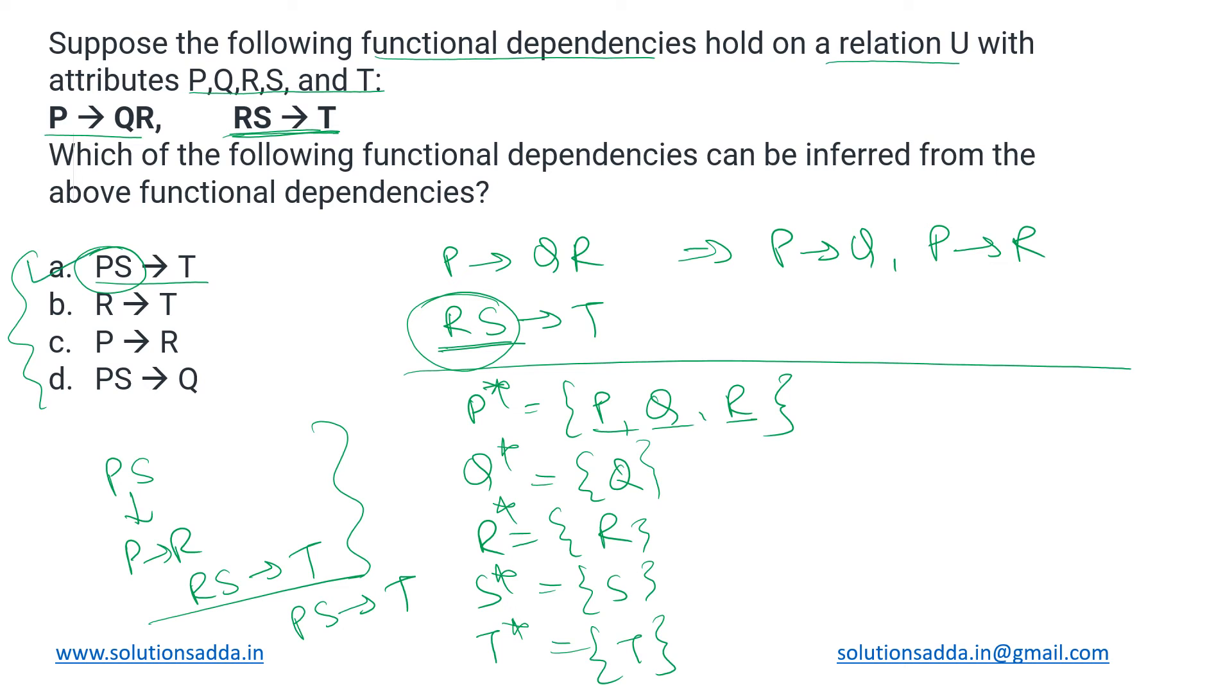Next one is R derives T. Now here, the second FD is RS are collectively deriving T, and R does not derive S, so independently R cannot derive T as well. So this FD will not hold true. The third one, P derives R, we have already got that, so it is holding.